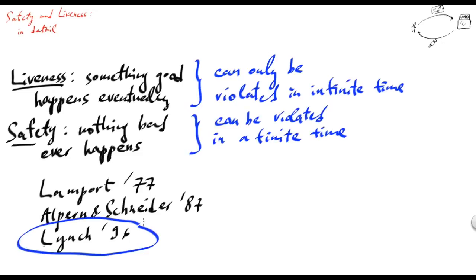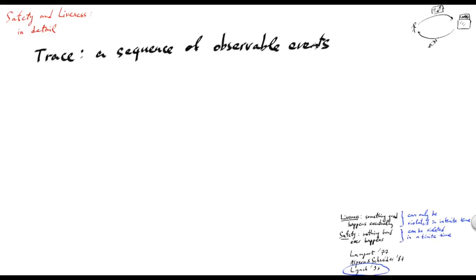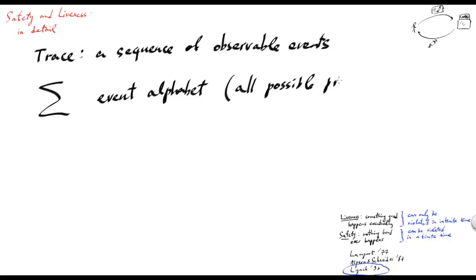This is the formulation we are going to use in the following. Let us try to define the notions of safety and liveness formally. First of all, we need to define the notion of a system trace, or program trace. A trace for us would be a sequence of observable events — all events that could be observed by an external entity. Let's define sigma as the event alphabet; for example, this could be all possible program actions that can be externally observed.